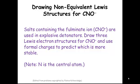So let's start with non-equivalent Lewis structures first. The fulminate ion, CnO⁻, is used in explosive detonators. It's not very stable. We're going to draw three Lewis electron structures for the fulminate ion, and then we're going to use their formal charges to predict which one is more stable.